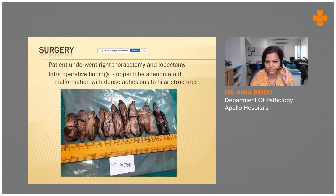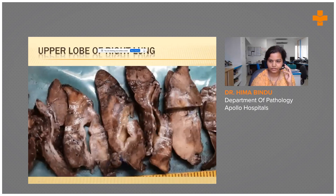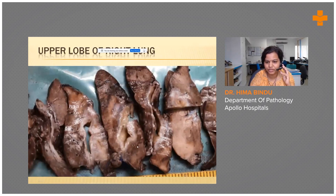These are the serial sections of the lobe, showing the cystic lesion in the center continuous with the hilar structure. The closer view shows a central cyst with a thick wall. The surrounding lung parenchyma was very firm and had lost its regular spongy nature, while the periphery appeared normal with a spongy appearance.